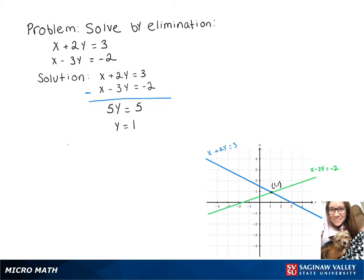Now we can put that y value back into our equation. We get x minus 3 times 1 equals negative 2, and our x value is 1. So our solution to this is (1, 1). And if you look at our graph, that's where our lines intersect.